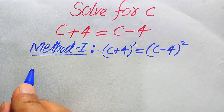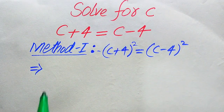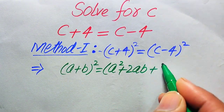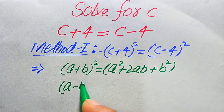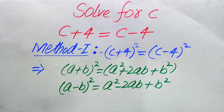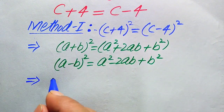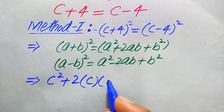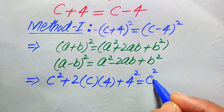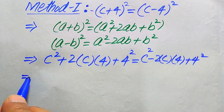We expand using two algebraic formulas: (a + b)² = a² + 2ab + b², and (a − b)² = a² − 2ab + b². Applying these, the left side becomes c² + 2(c)(4) + 4², and the right side becomes c² − 2(c)(4) + 4².